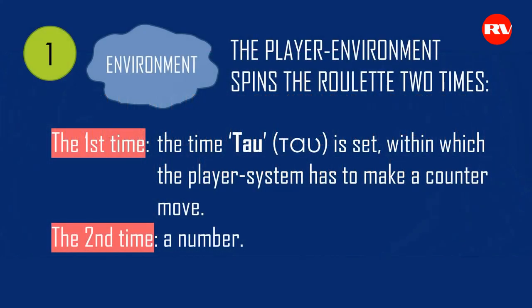So the player environment — an environment is something that exerts an impact on a certain system — rotates the roulette two times. The first time, the time tau is set, within which the player system has to make a counter move. The second time, a number comes out. The first time the lottery machine is rotated, a ball with a number on it comes out indicating the time within which a counter move has to be made by the system. The second time, a number comes out which is compared with the number of the system.